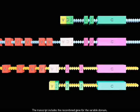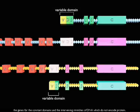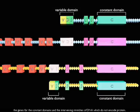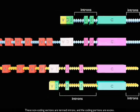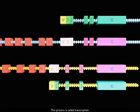The transcript includes the recombined gene for the variable domain, the genes for the constant domains, and the intervening stretches of DNA which do not encode protein. These non-coding sections are termed introns, and the coding portions are exons. This process is called transcription.